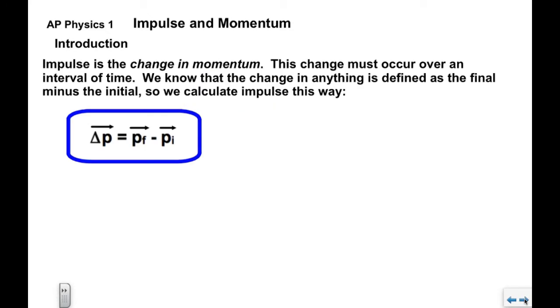So now, impulse is a change in momentum. This change in momentum must occur over an interval of time. We know already that the change in anything is defined as the final minus the initial. So we calculate impulse this way: Impulse is delta P, of course that means change in momentum, equals final momentum minus initial momentum.